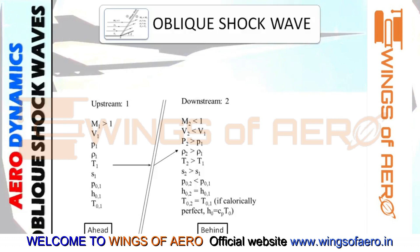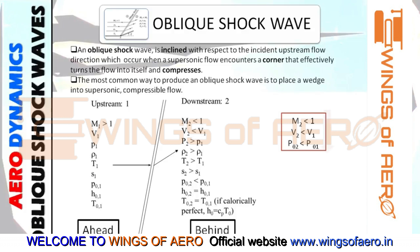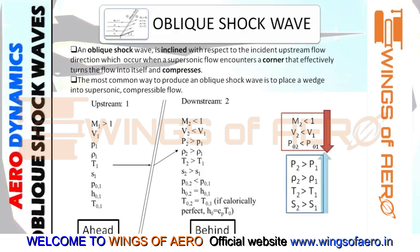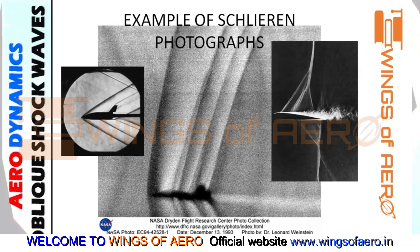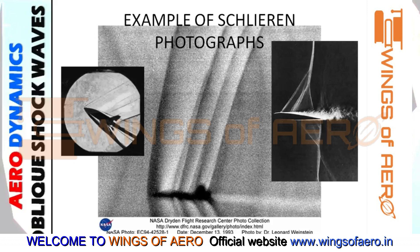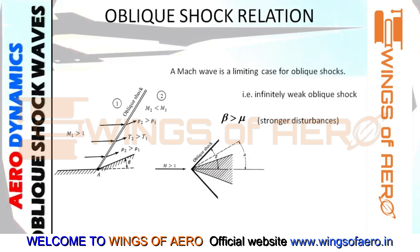As discussed in previous videos, when an oblique shock wave occurs, you can see the properties ahead and behind the shock wave. The Mach number, velocity, and stagnation pressure decrease, while the static properties increase. This is a fundamental property across an oblique shock wave. Here you can see a skeleton graph showing how the shock wave takes place as the aircraft or spacecraft is inclined with the incident, showing the oblique shock wave and the expansion shock wave.